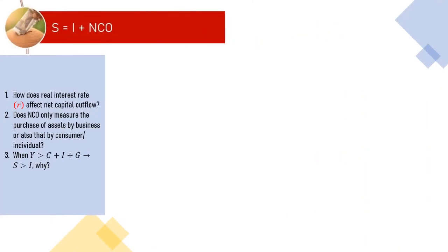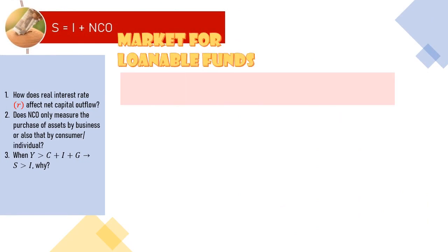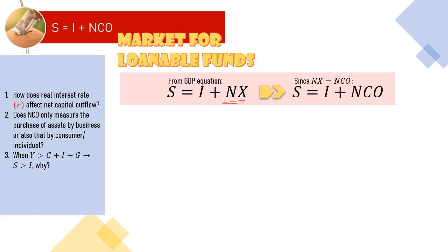Now we have these questions. Remember the market for loanable funds. In an open economy, we include net export in our calculation of GDP. That is why our equilibrium is no longer saving equals investment. It is saving equals to investment plus net export. And then, since we have the identity that net export equals net capital outflow, saving is now expressed as the summation of investment and net capital outflow.